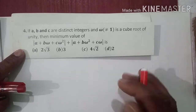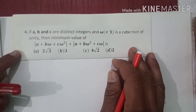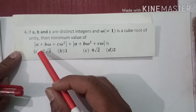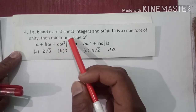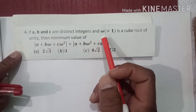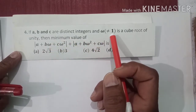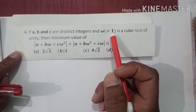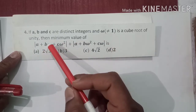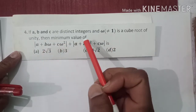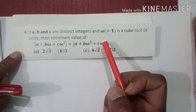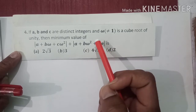Hello students. Chapter complex numbers سے ہمارا اگلا question ہے: If a, b, c are distinct integers and omega (which is not equal to 1) is a cube root of unity, then minimum value of this expression ہمیں find کرنا ہے۔